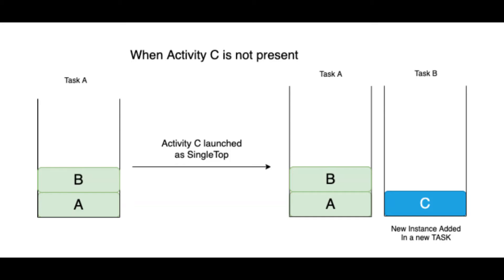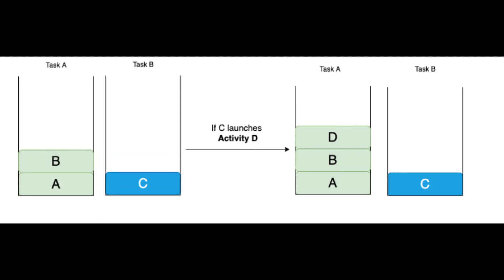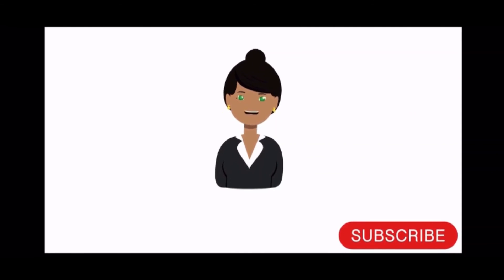For example, suppose we have four activities: A, B, C, and D, and we make C a Single Instance activity. Whenever we launch C for the first time, it will be created in a different task. Every time C is launched from any other activity, it will remain in that different task. If we launch any other activity from C, it will be added to the other task where all the activity instances are present. That was all about the different launch modes for Android — I hope this video helps you.